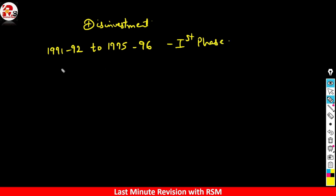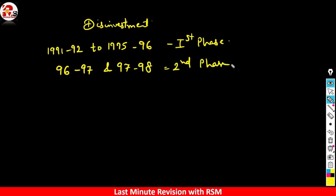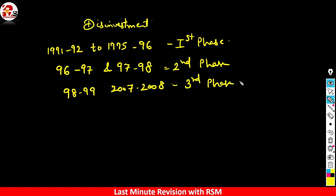The second phase of disinvestment covered 1996–97 and 1997–98. The third phase covered 1998–99 and 2007–08. The fourth phase started from 2008 onwards. You need to remember these phases and the receipts generated during each phase.